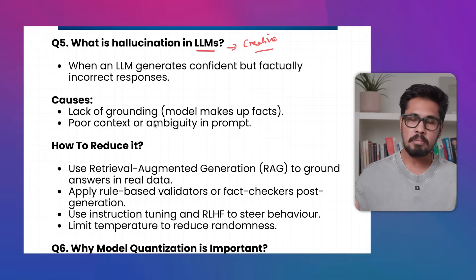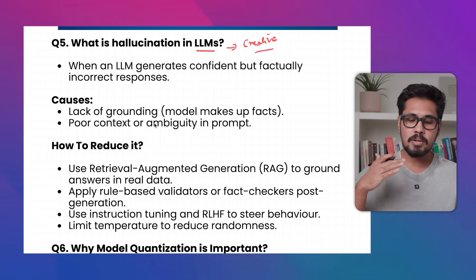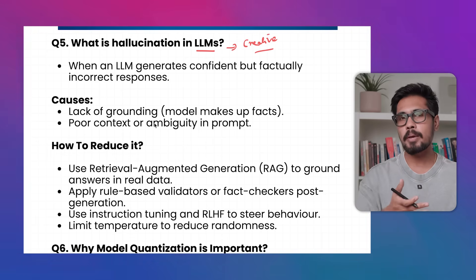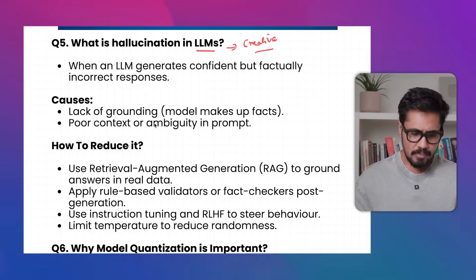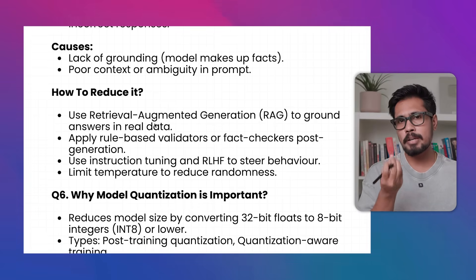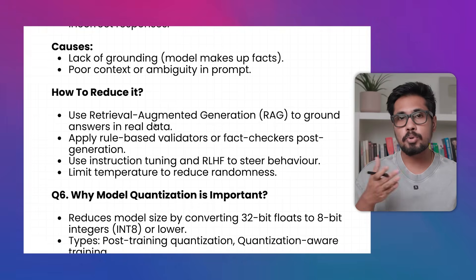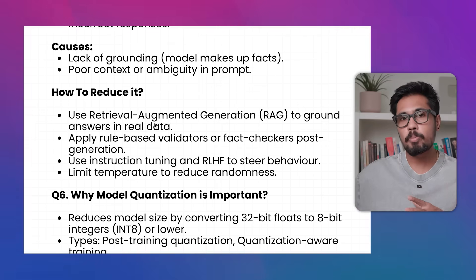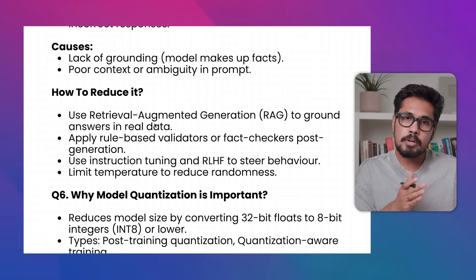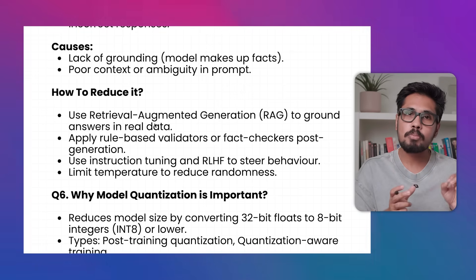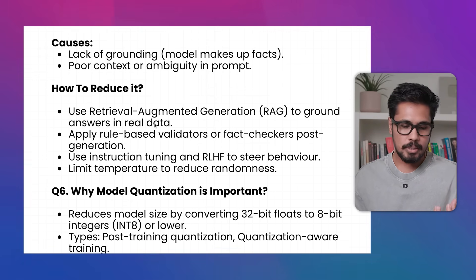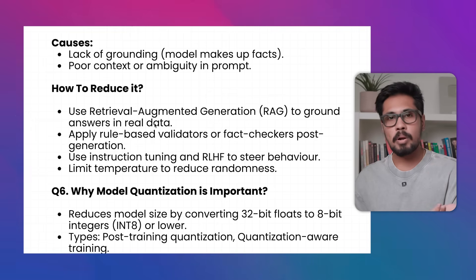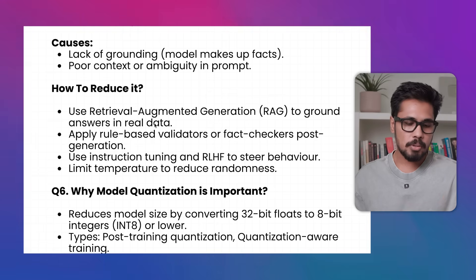To reduce hallucination, you can use RAG architecture by providing an external document, use an external rule-based validator, validate responses with RLHF (reinforcement learning-based models), and limit your temperature values. Temperature closer to 1 makes the model more probabilistic; closer to 0 makes it more deterministic. Fine-tuning and pre-training are also examples of ways to reduce hallucination levels.